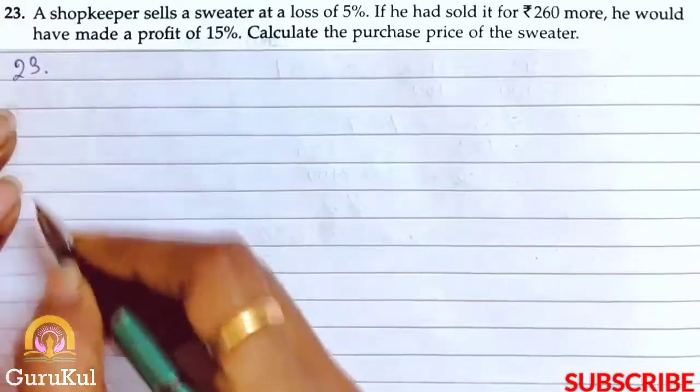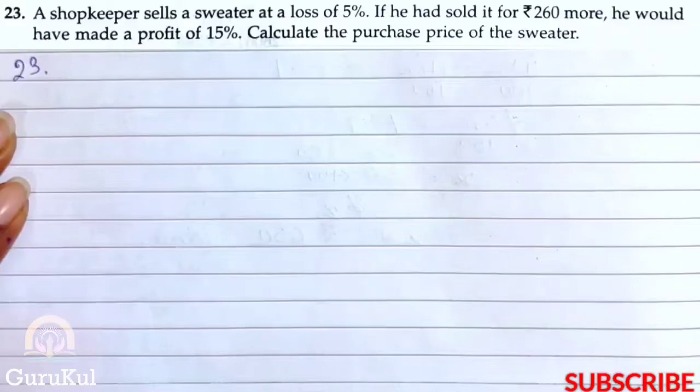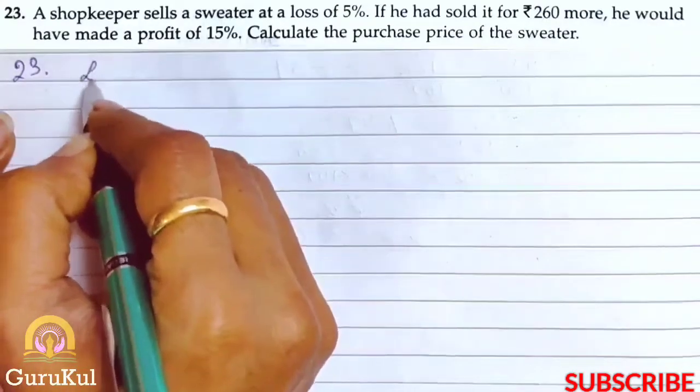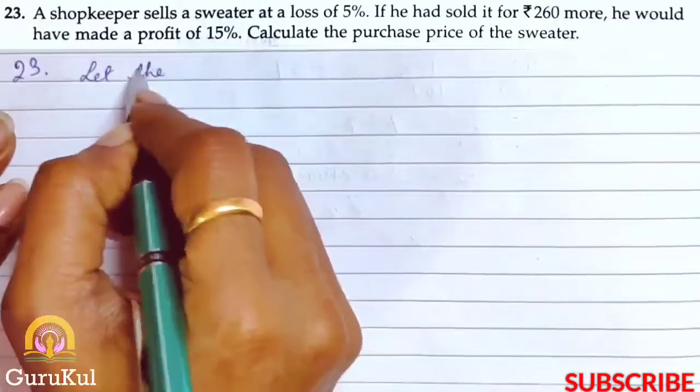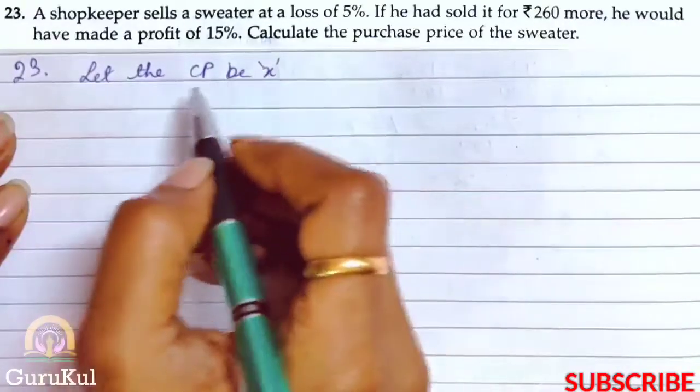Question number 23. A shopkeeper sells a sweater at a loss of 5%. If he had sold it for rupees 260 more, he would have made a profit of 15%. Calculate the purchase price of the sweater.